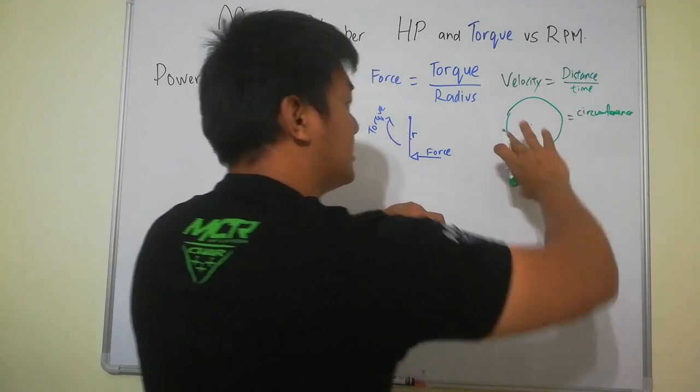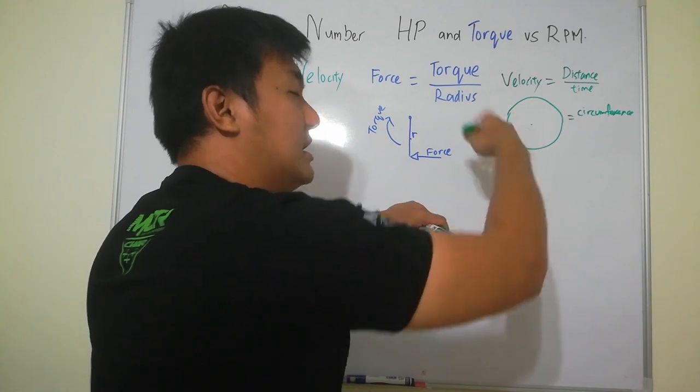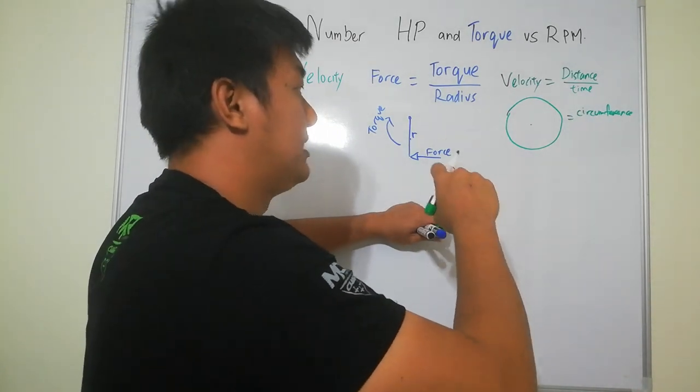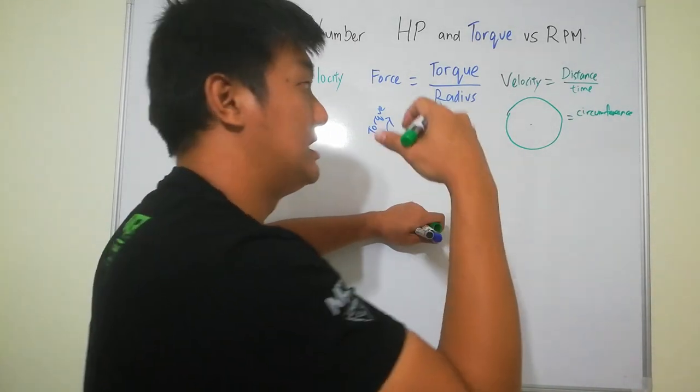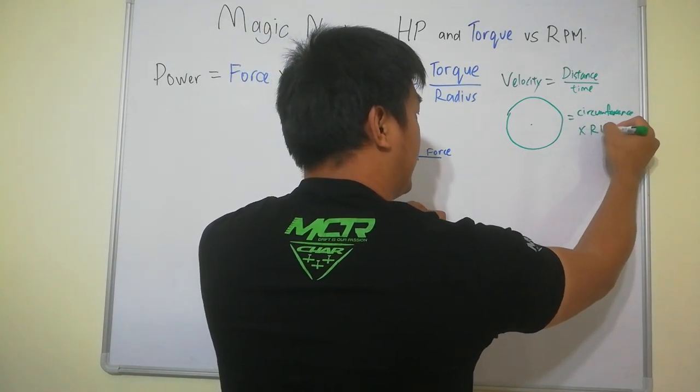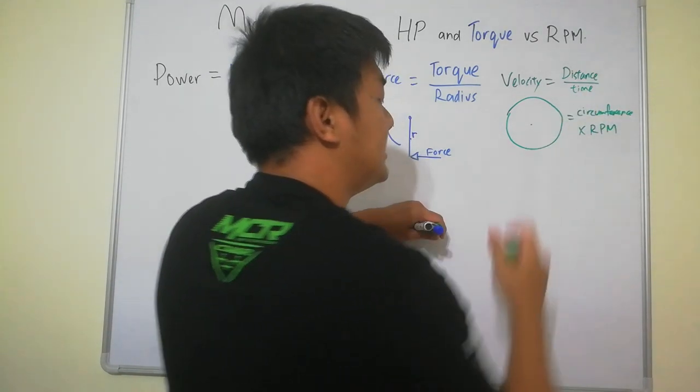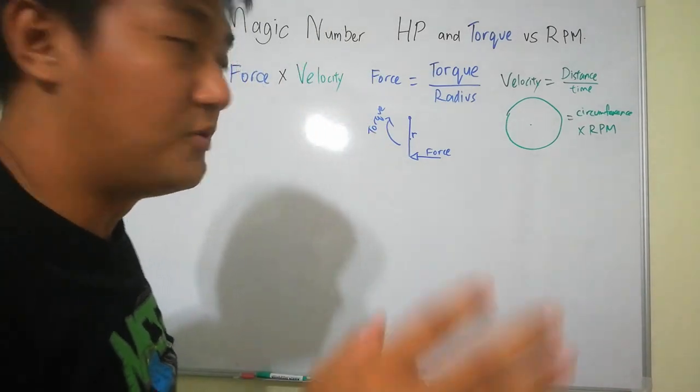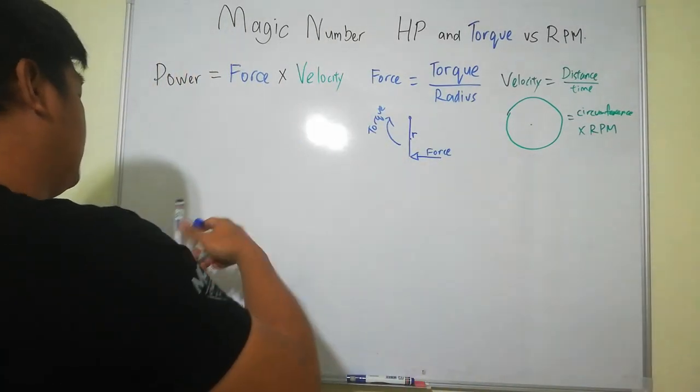Divided by time so how much turning I'm doing. I can use it in terms of engine in RPM. So circumference times RPM is actually distance. So we plug everything in into this formula.